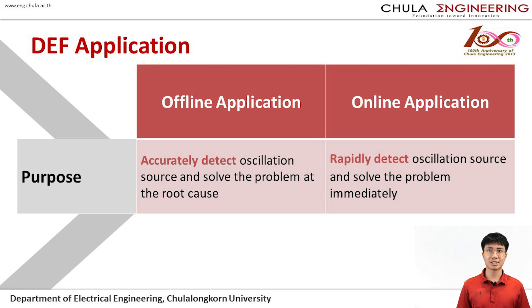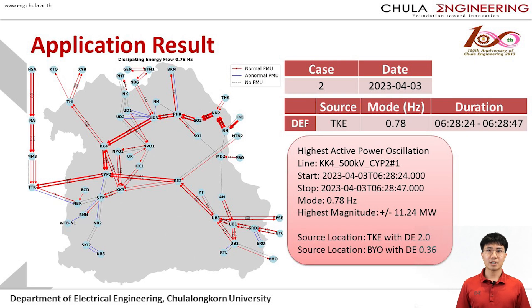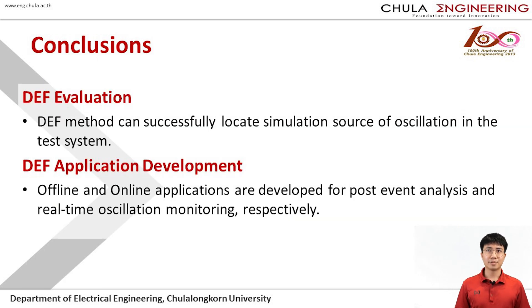Offline applications are used in post-event analysis, requiring accurate detection, while online applications need to rapidly detect to monitor real-time oscillations. Both offline and online application results are shown here. The directions of the energy flows are shown in the picture, and the information of the oscillations are shown in text. In summary, the DEF method can successfully locate the oscillation source in the test system, and offline and online applications are developed for post-event analysis and real-time oscillation monitoring, respectively.